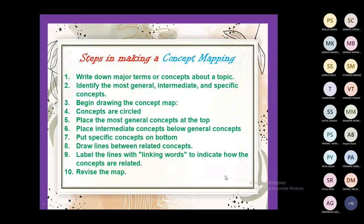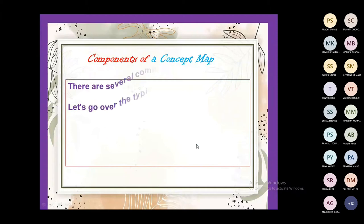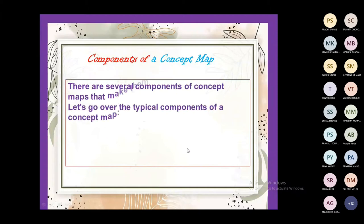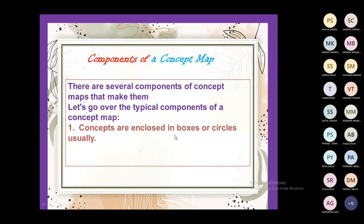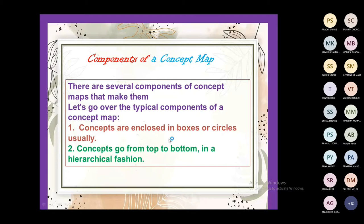Now, the components of a concept map — very important components. There are several components that make concept maps very innovative. First, concepts are enclosed in boxes or circles. The concepts go from top to bottom in a hierarchical fashion — that is very important. The main concept you want to explain always comes at the top of the concept map.